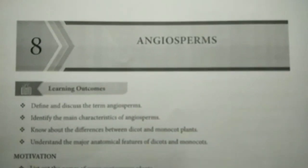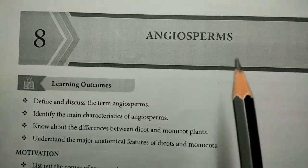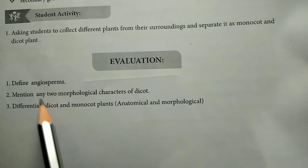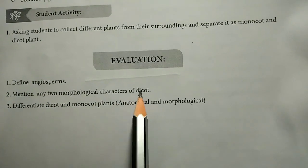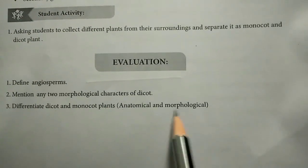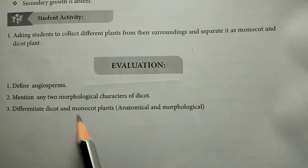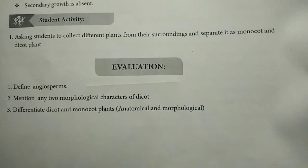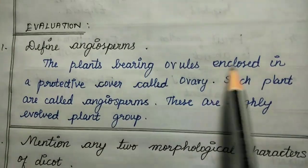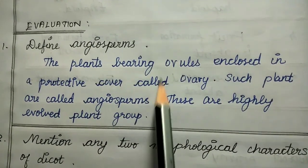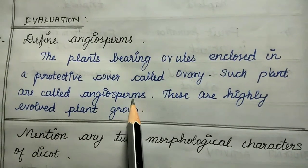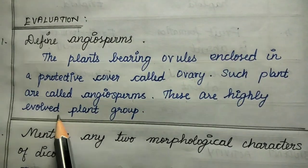Eighth lesson: Angiosperms. Evaluation has three questions. First question: define angiosperm. Plants bearing ovules enclosed in a protective cover called the ovary — such plants are called angiosperms. They are highly evolved plant groups.